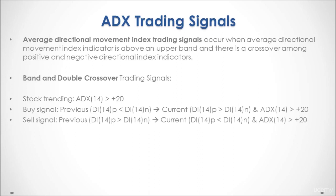On the other hand, we have a sell signal if the previous positive directional index was above the negative directional index and then the current positive directional index is below the negative directional index, and this is confirmed by the average directional movement index being above plus 20.